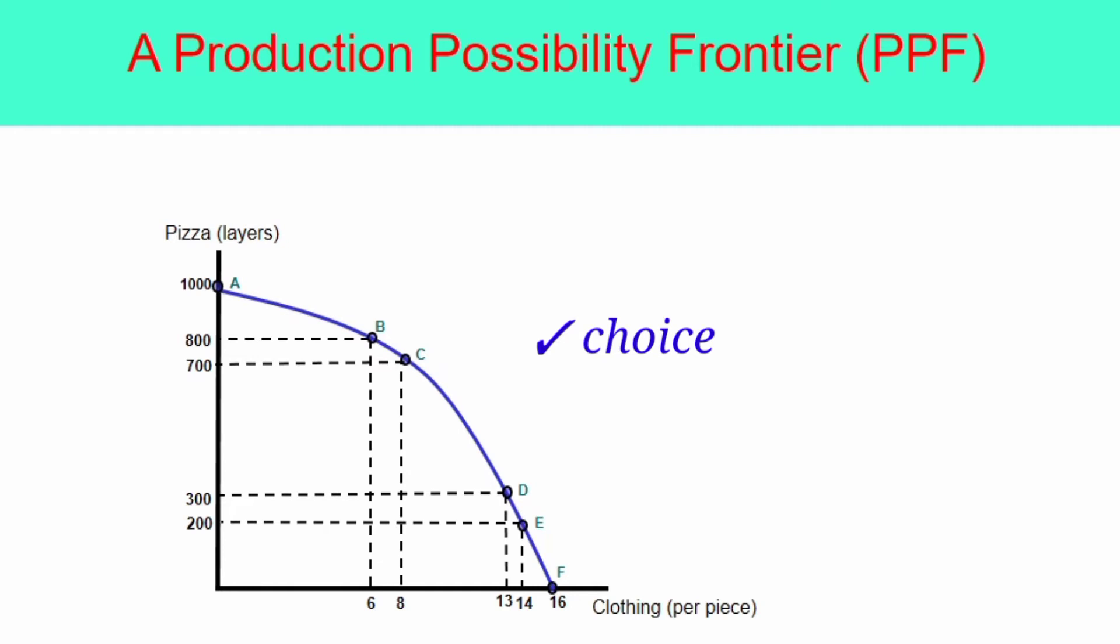Take note that the points located along the PPF are also the choices that the firms are facing. Will the firm produce at point A, B, or C, or F? The firm has to make a decision as to what quantity of pizza and clothing will he produce. And again, in making a choice or decision, there will be opportunity costs.